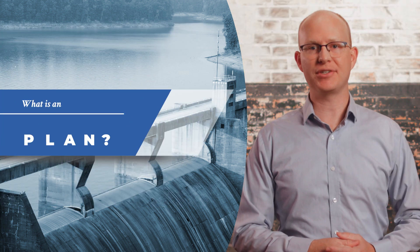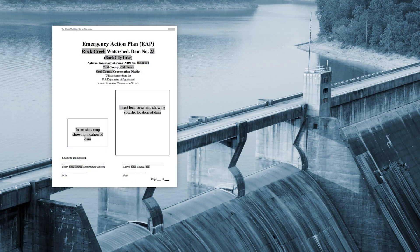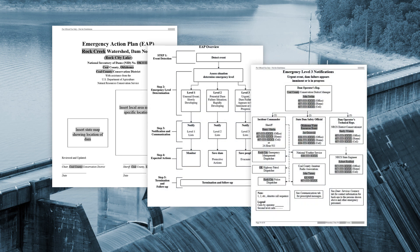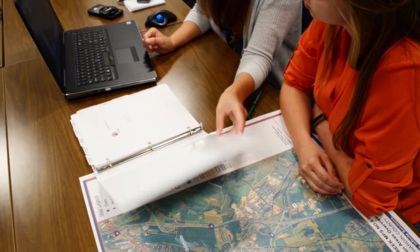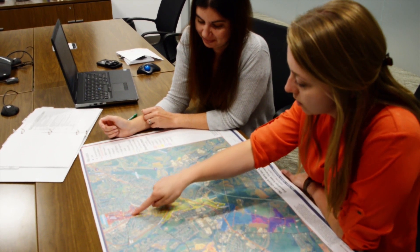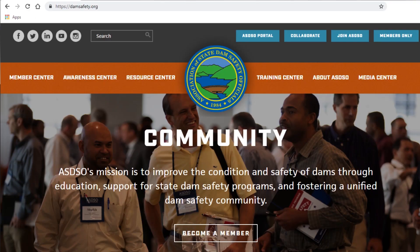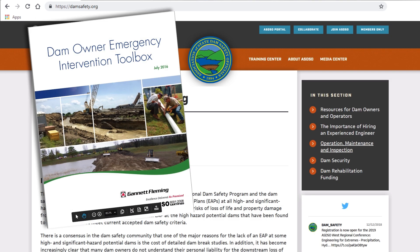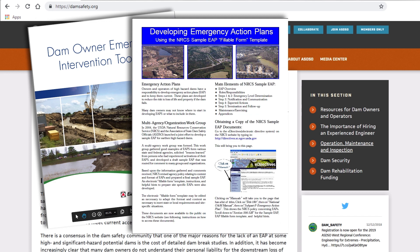What is an emergency action plan? An emergency action plan is a step-by-step guide that tells an owner what to do if they think there is a safety issue with their dam that could lead to an uncontrolled release of water or breach. If a breach is imminent, the plan includes communication protocols, evacuation routes, location of emergency supplies, and inundation mapping. Developing an emergency action plan is a collaborative effort with local stakeholders, and ASDSO has resources available to guide owners through the process.